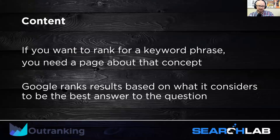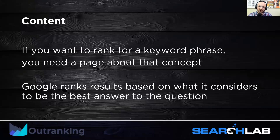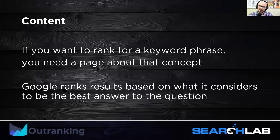Google ranks results based on what it considers the best answer to someone's question — the user's query. What does 'best' mean? Best means the content is comprehensive, factual, evidence-based, and addresses not only the user's question but related questions that are implicit in that query. So if I'm a personal injury lawyer, my landing page — if it's a good page — addresses not only that I'm a personal injury lawyer in Chicago, but also questions other users might want to know about my service.